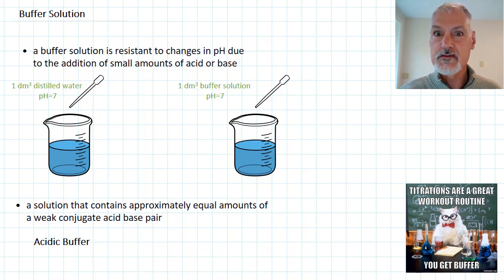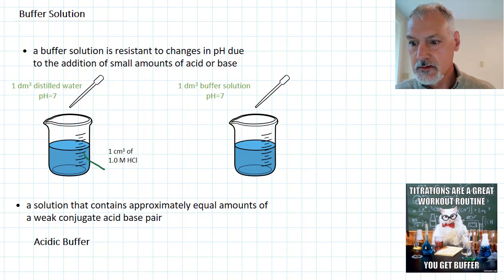Let's start by looking at a beaker that is not buffered. Here I have a beaker that contains just distilled water, and to it we'll add one drop or about one cubic centimeter of hydrochloric acid. The result would be a drastic change in pH. The math would indicate you should end up with a pH of around 3, so a change of 4 pH units.